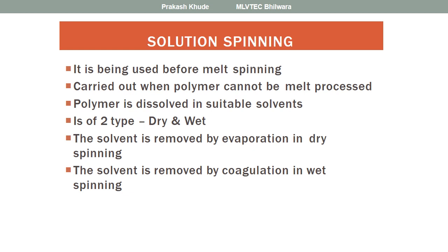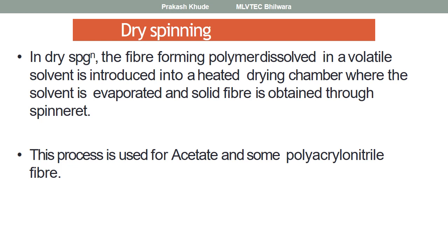In dry spinning systems, the solvent is generally evaporated, whereas in wet spinning systems the solvent is removed by coagulation. In dry spinning systems, with the help of hot air, the solvent used for dissolution of the polymer is removed by evaporation, while in wet spinning systems it is removed by certain chemicals.